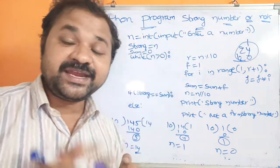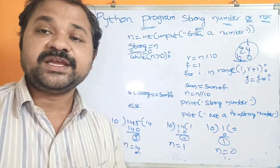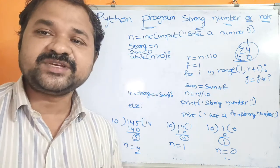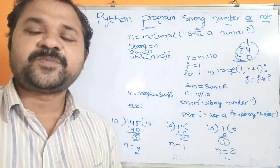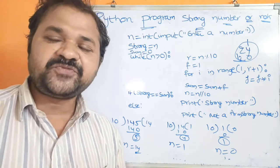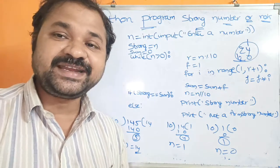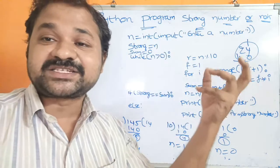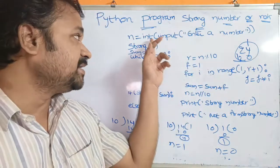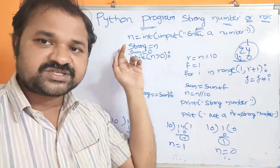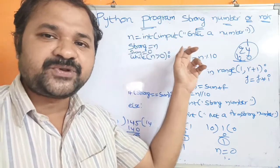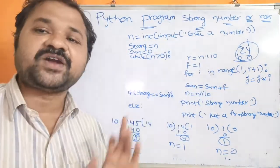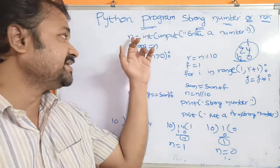Now let us see the program. First we have to read a number from the keyboard. In Python we use the input function. The problem with input function is it returns data as a string, so we have to convert that string into an integer using the int function. So: n = int(input('Enter n: ')). We have entered 145, so now 145 is present in n.